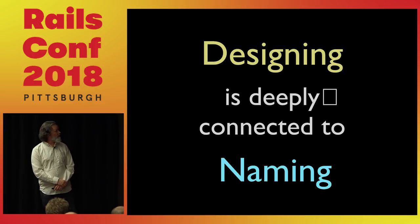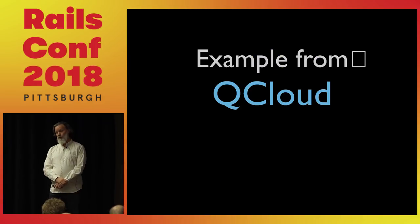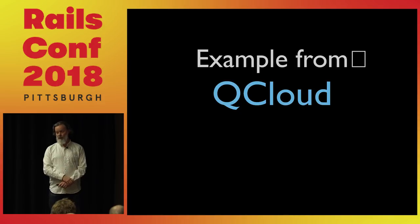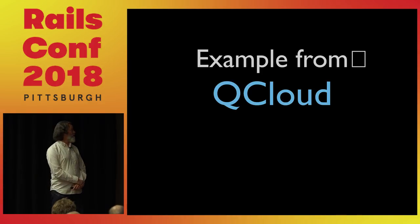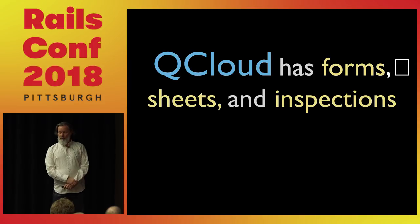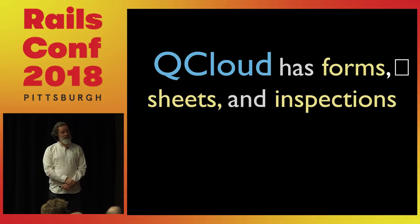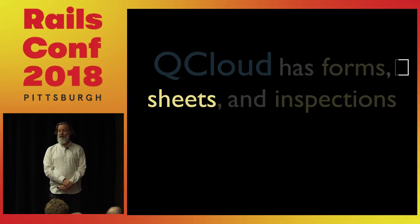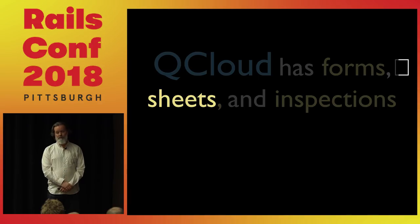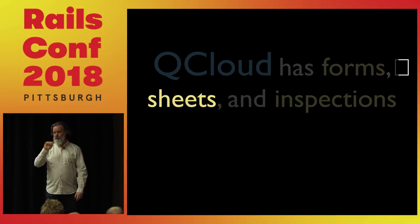The program is called QCloud. It's used by people on an iPad, typically wandering around a factory doing quality control — that's where the Q comes from: QC, QCloud. It's quite a simple application: people design a form, then people fill out the form, and we call that a sheet. The sheet might have several inspections. For example, if you stop at a restaurant on the highway and go into the washroom, you might see a piece of paper on the back of the door with signatures — that's like a sheet with inspections happening.